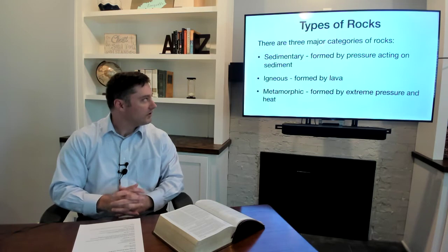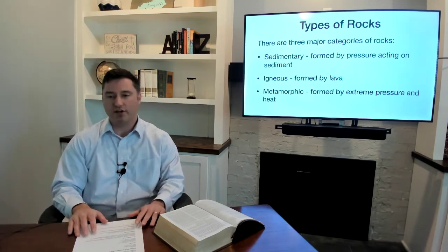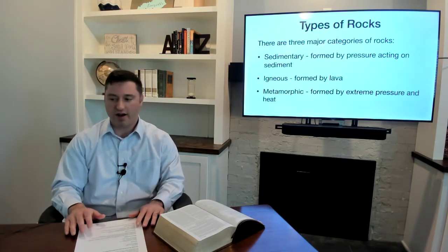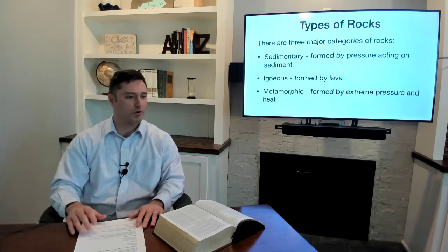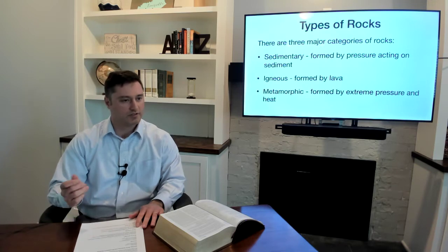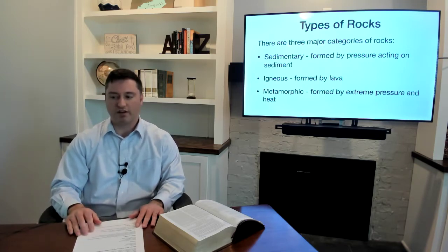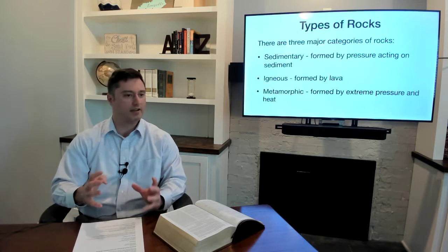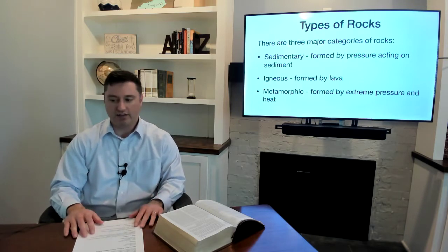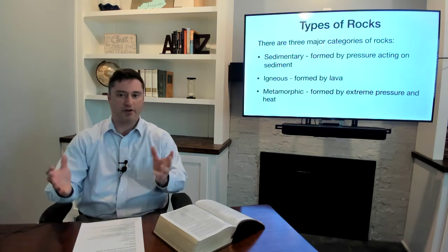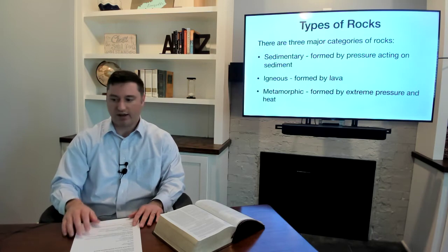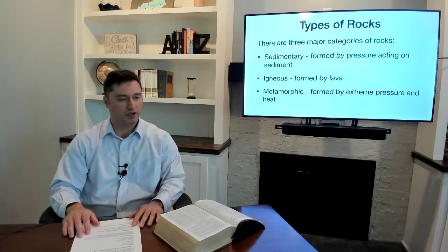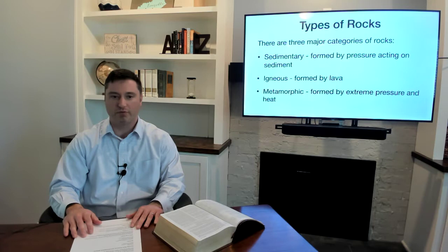Talking about rocks, there are three major categories of rocks. You have sedimentary rocks and that's formed by pressure acting on sediment. Sediments like sand or dirt, loose materials. And so sedimentary rocks are formed by pressure over time acting on sediment. Igneous rocks are formed by lava. So lava comes out of a volcano and eventually it cools down and you can pick up volcanic rock, igneous rock, and you can see like black sand beaches and stuff that were formed by igneous rock. So that's fun.